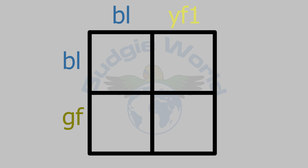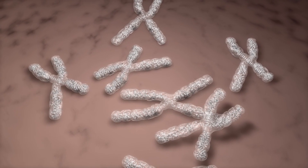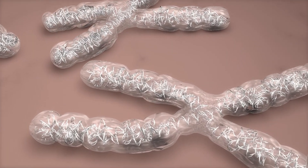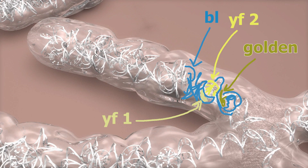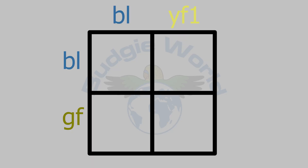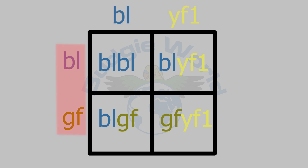What would happen if we breed a single factor yellow face type 1 budgie with a single factor golden face budgie? These are two different mutations, but they can be put in one Punnett square because these genes are all located in the same place on the locus and act upon the yellow pigmentation. The result: 25% of offspring will be normal blue, 25% will have single factor yellow face type 1, and 50% will express single factor golden face. Half of those golden face budgies will also carry the yellow face type 1 mutation, but it is hidden under the golden face.